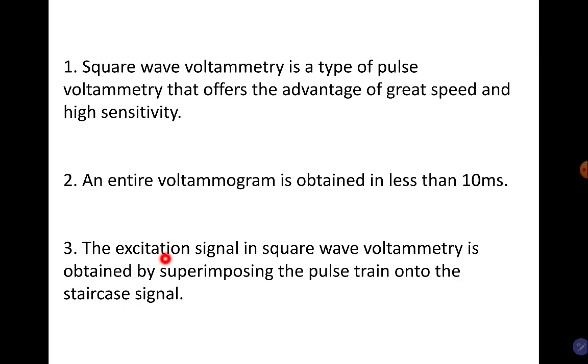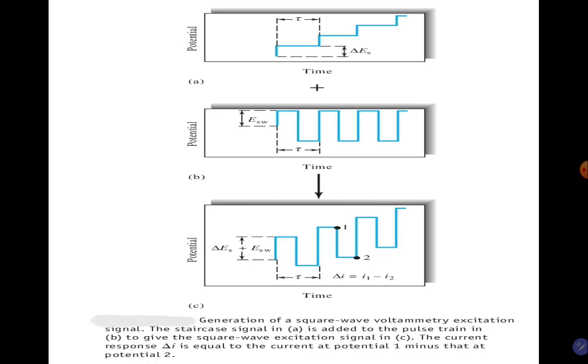The excitation signal in square wave voltammetry is obtained by superimposing the pulse train onto the staircase signal. Generation of square wave voltammetry excitation signal - here is a diagram. This is an important diagram you can note down.